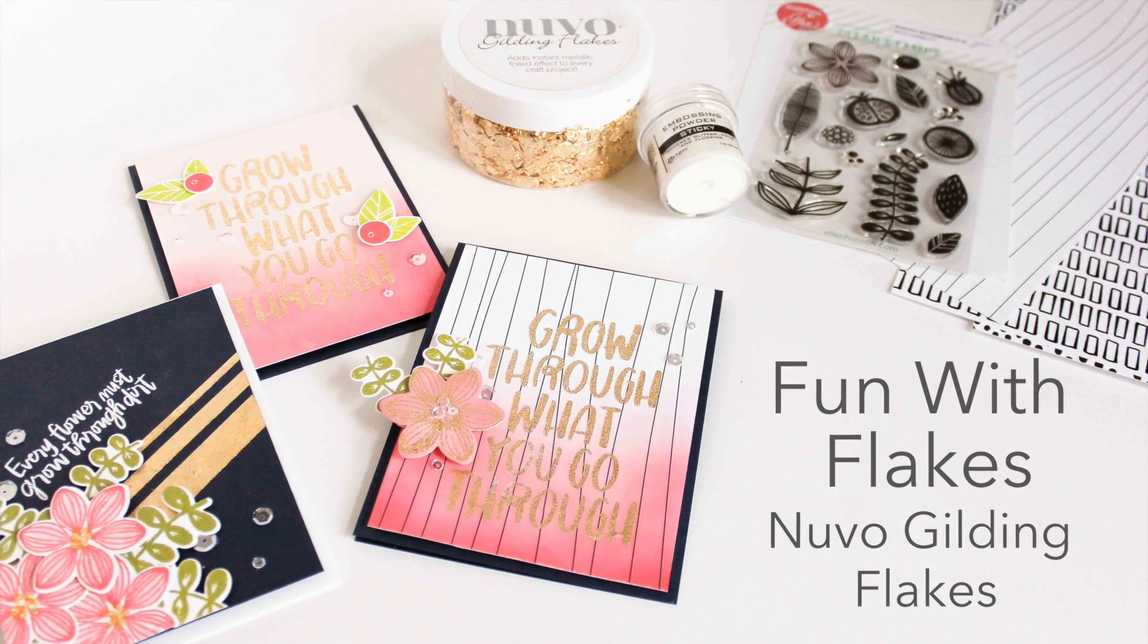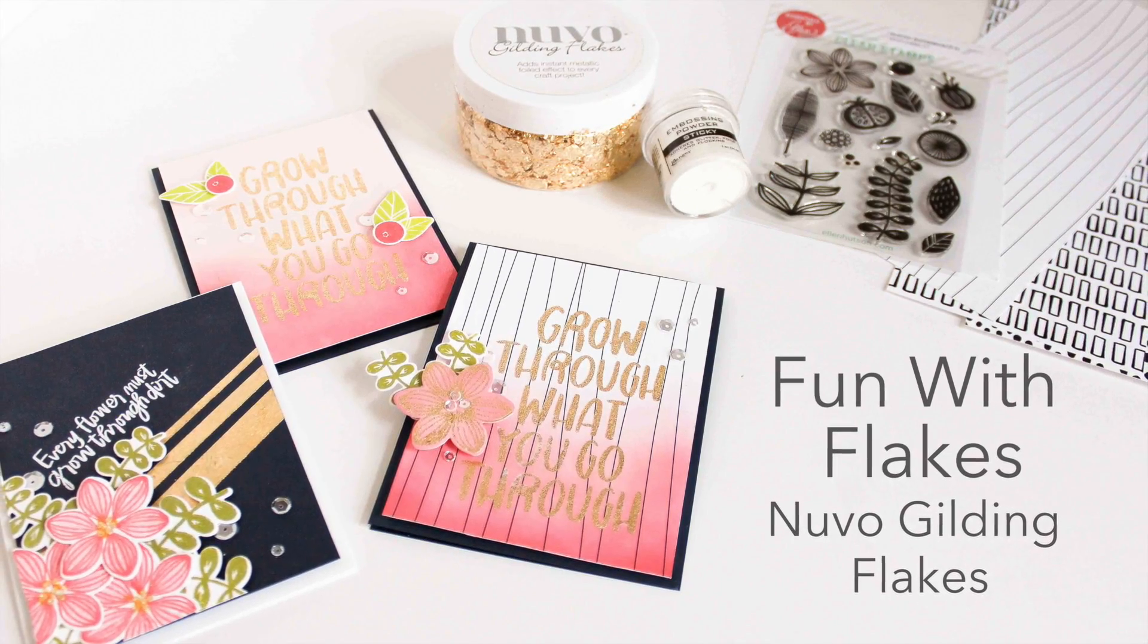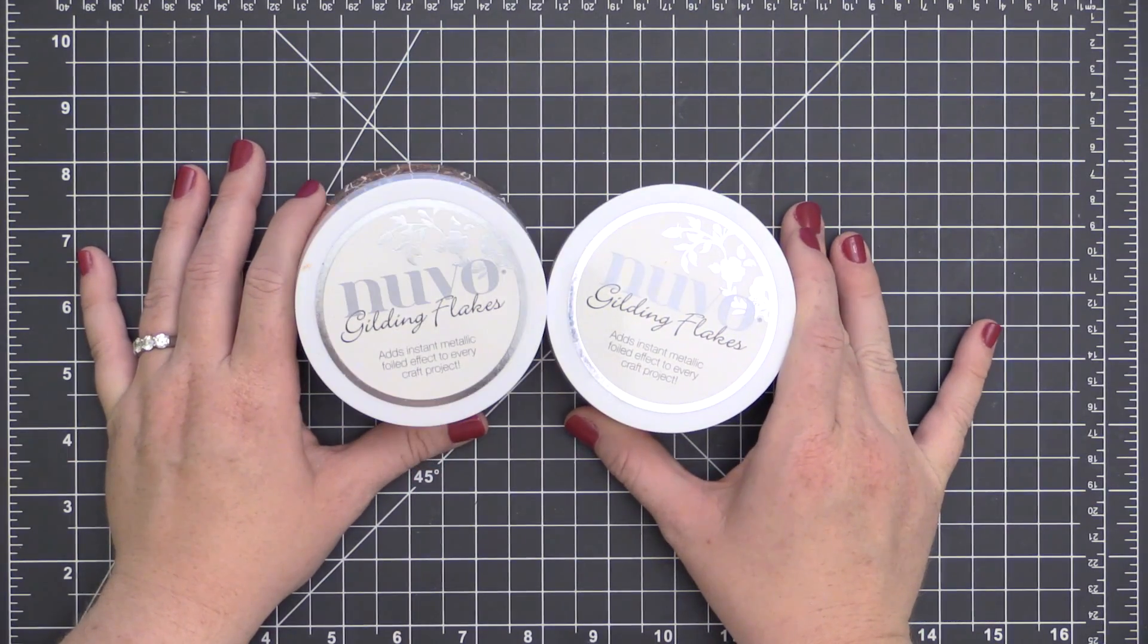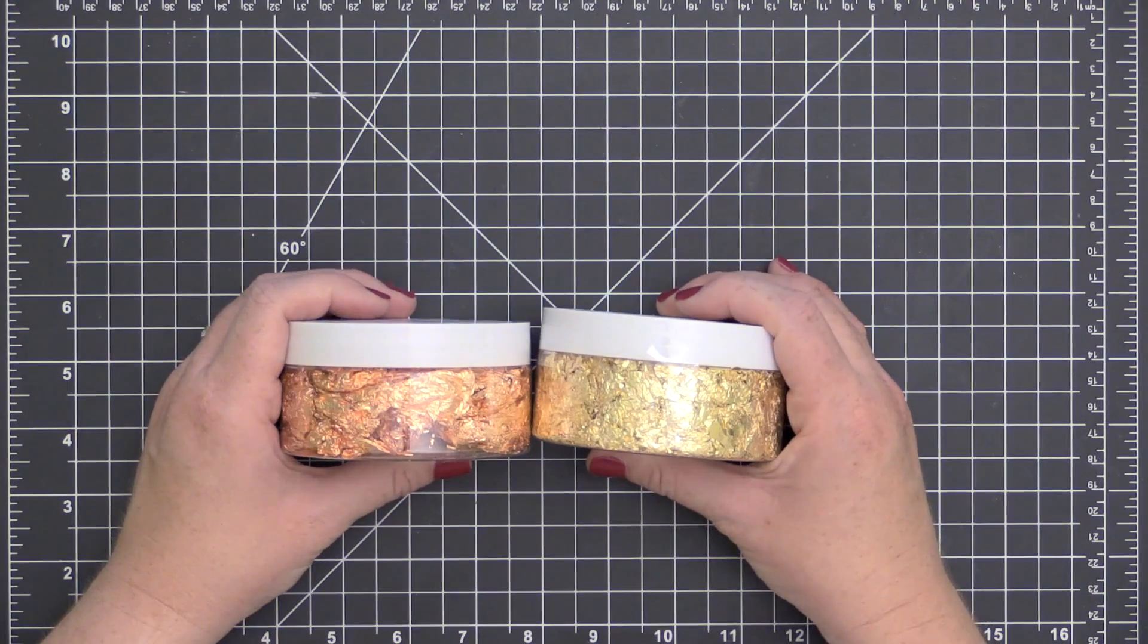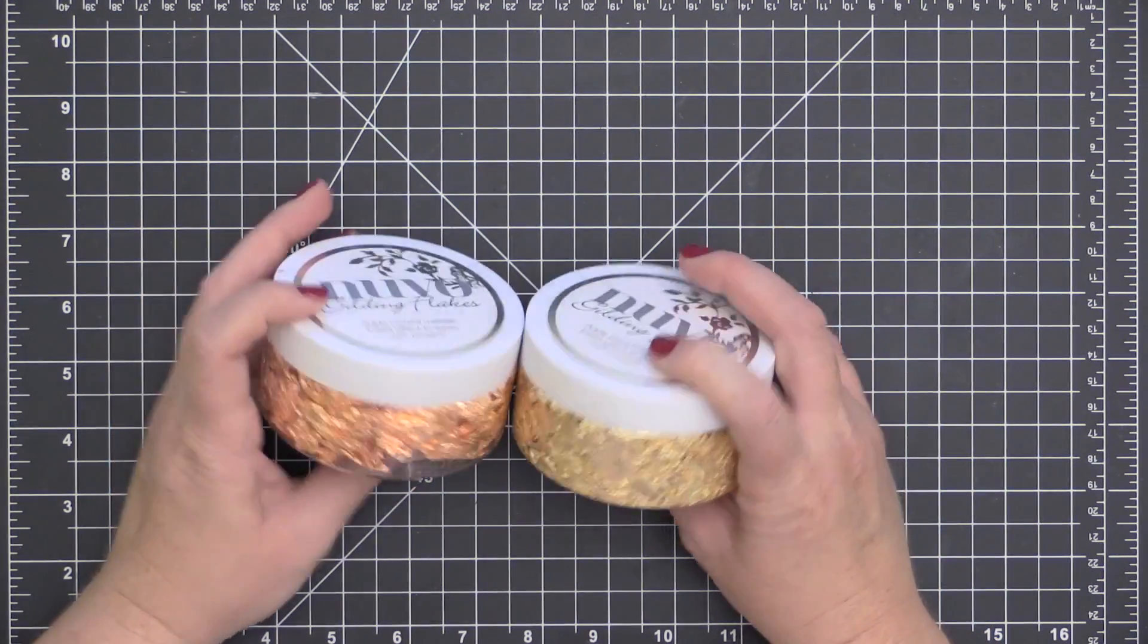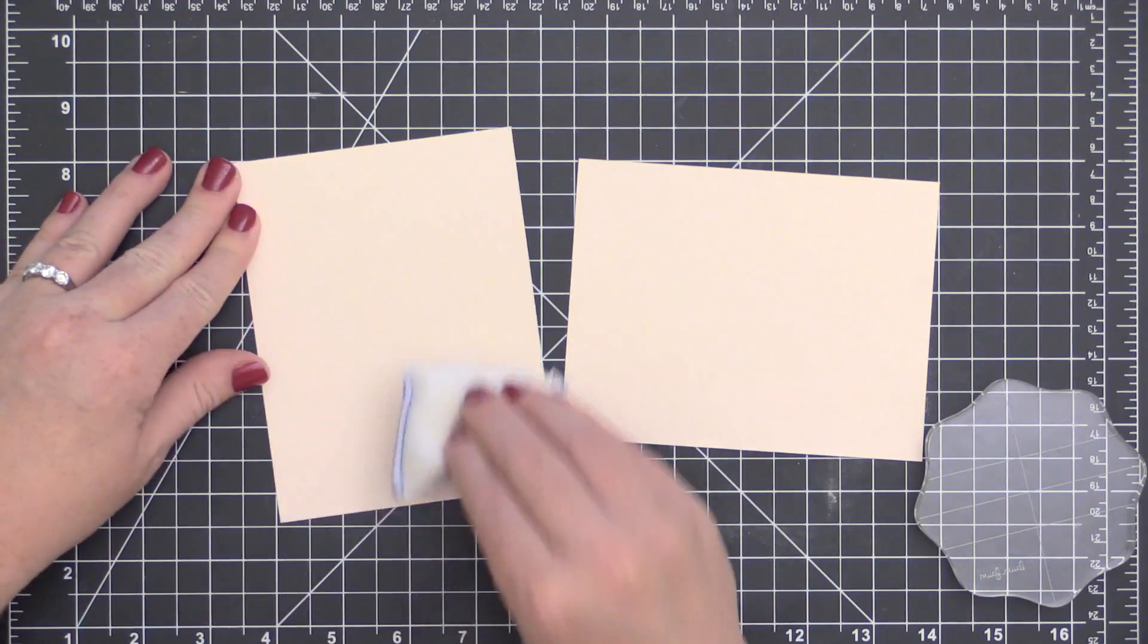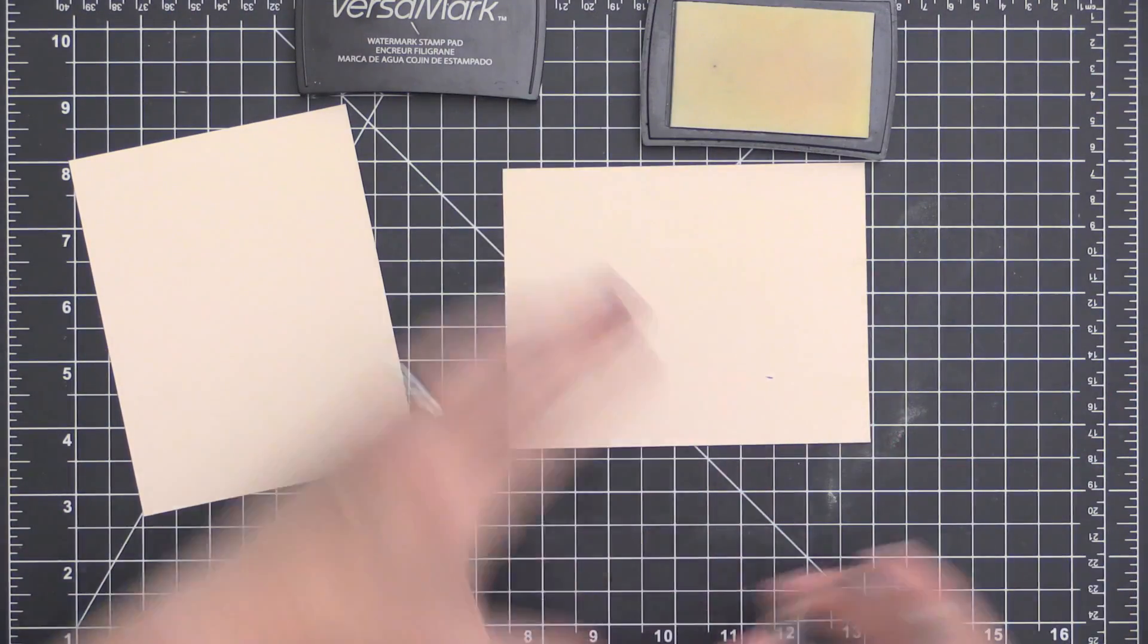Hey everyone, it's Carissa. Thanks for joining me today. Today we're going to have a little fun with flakes. I'm talking about the Nouveau gilding flakes. I only have a couple colors here, the copper and the gold gilding flakes from Nouveau. Gilding flakes have been on the market for quite some time. They're kind of like something that's a little bit retro, but they're kind of making a comeback, so I wanted to give you some ideas on how you can use them today.